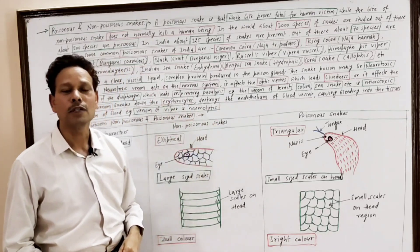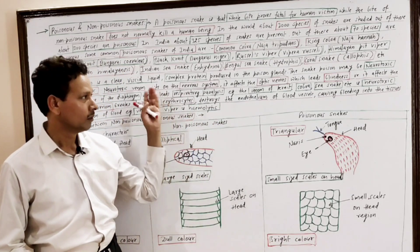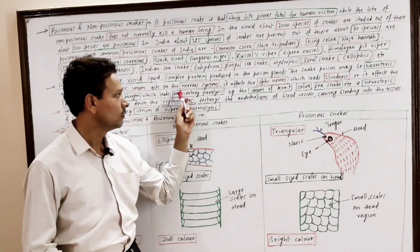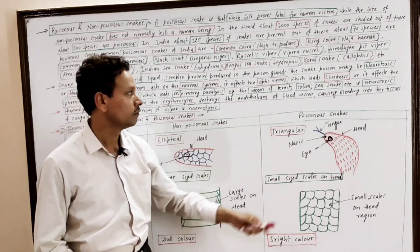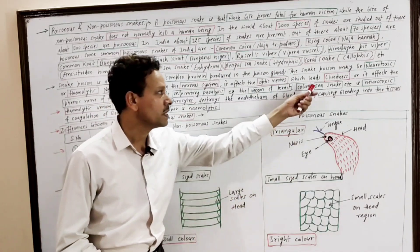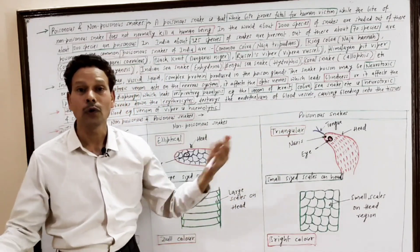Common examples of neurotoxic poison: the venom of krait, king cobra, sea snake, etc. are neurotoxic.